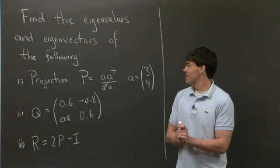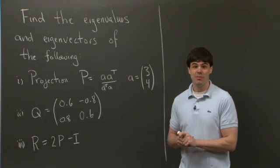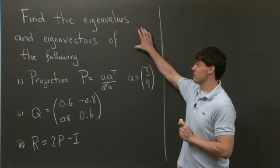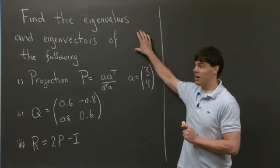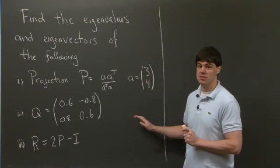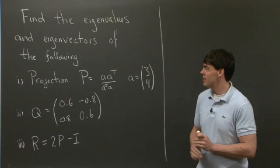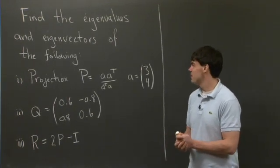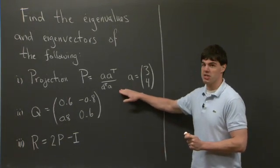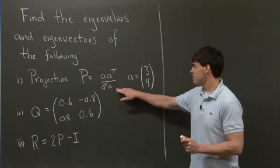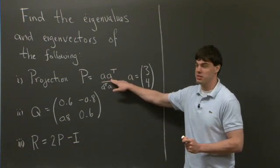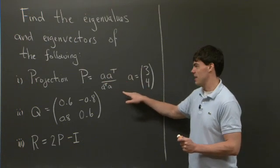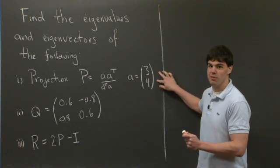Hi everyone. For this problem, we're going to take a look at computing some eigenvalues and eigenvectors of several matrices. This is just a review problem for exam number 3. Specifically, we're given a projection matrix which has the form A A-transpose divided by A-transpose A, where A is the vector [3, 4].